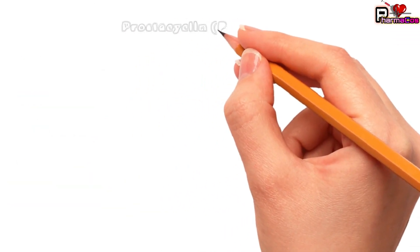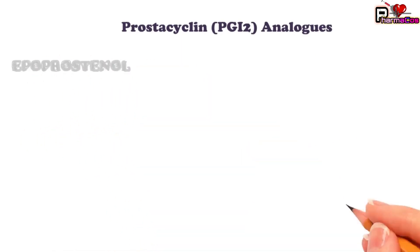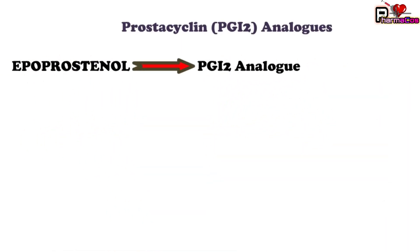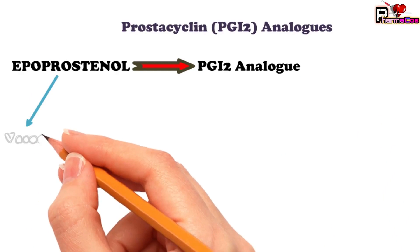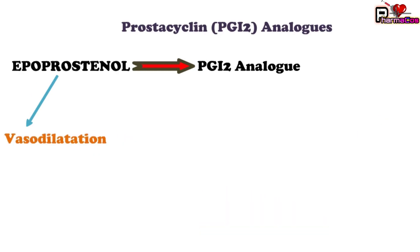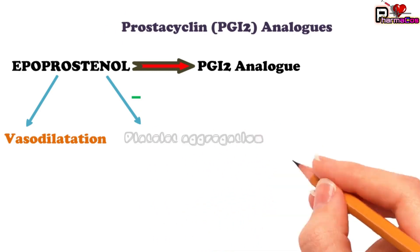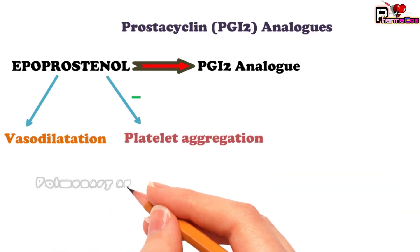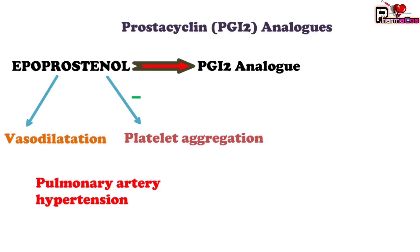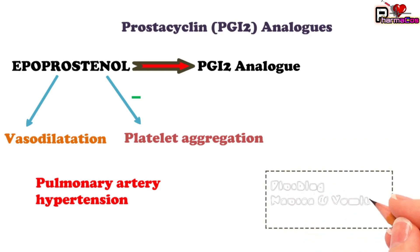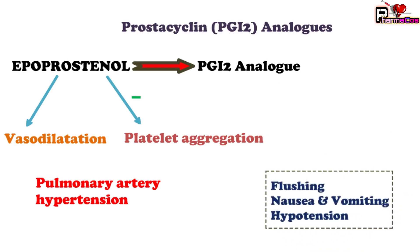The next category is prostacyclin analogs. One drug is epoprostenol, a prostaglandin I2 analog. Epoprostenol acts as a vasodilator — it produces vasodilation by increasing cyclic AMP levels — and also inhibits platelet aggregation. That is why this drug is used for pulmonary arterial hypertension. Its side effects, due to its vasodilatory action, include flushing, nausea, vomiting, and hypotension.